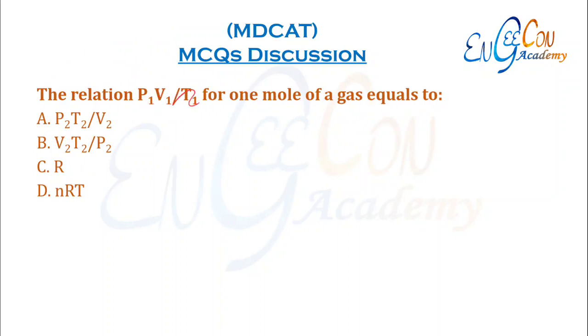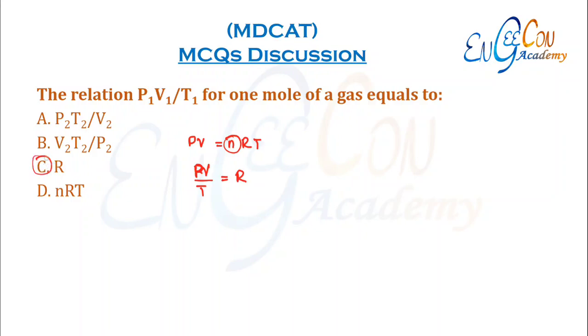The relation P1V1/T1 for 1 mole of a gas equals: PV = nRT. For 1 mole, PV/T = R. So C is the correct option.